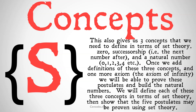This gives us the three concepts that we need to define in terms of set theory: zero, successorship (i.e., the number after), and a natural number (zero, one, two, three, four, etc.). Once we add definitions of these three concepts, and one more axiom that we're going to need — the axiom of infinity — into our set theory, we are going to be able to prove these postulates and build out all the natural numbers. We're going to define each of these three concepts in terms of set theory, then show that the five postulates may be proven using set theory, using all the axioms we have so far, plus one extra.